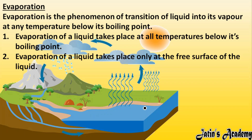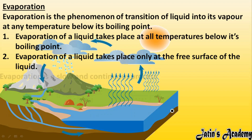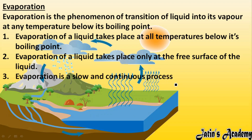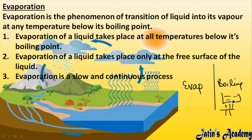Evaporation of liquid takes place only at the free surface of liquid. It is not going to take place in the bulk — only at the free surface. Evaporation is a slow and continuous process. For example, comparing evaporation and boiling: boiling happens more fast as compared to evaporation, because particles need to gain energy and vibrate before they can evaporate. So evaporation is very slow and continuous, while boiling is a fast process.